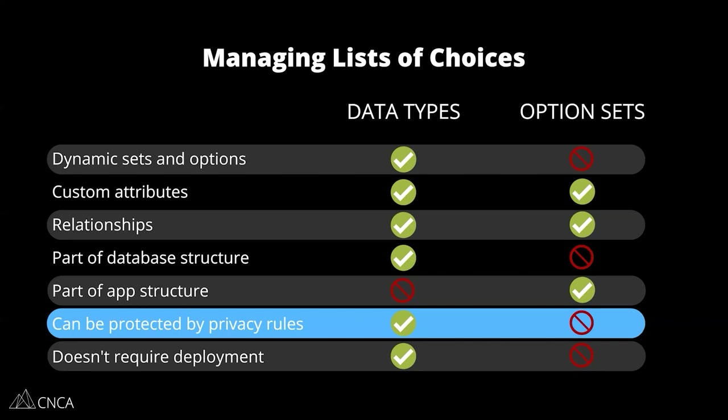Data types can be protected by privacy rules because privacy rules only apply to your database. You create privacy rules per data type. So you don't want to store sensitive information directly to the option set choices. If you are trying to save sensitive information like passwords and usernames to your option sets, you're not using option sets correctly. Those should be stored in your data types within fields so that you can protect them with privacy rules. Option sets should be more generic — more static lists of choices that can apply to really anybody. Of course, you can create conditions to offer specific sets and choices, but there should not be sensitive information saved to your option sets.